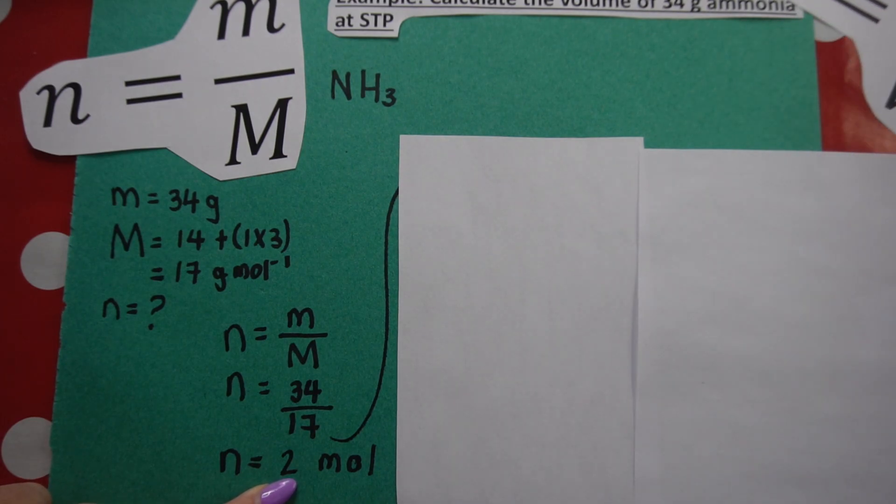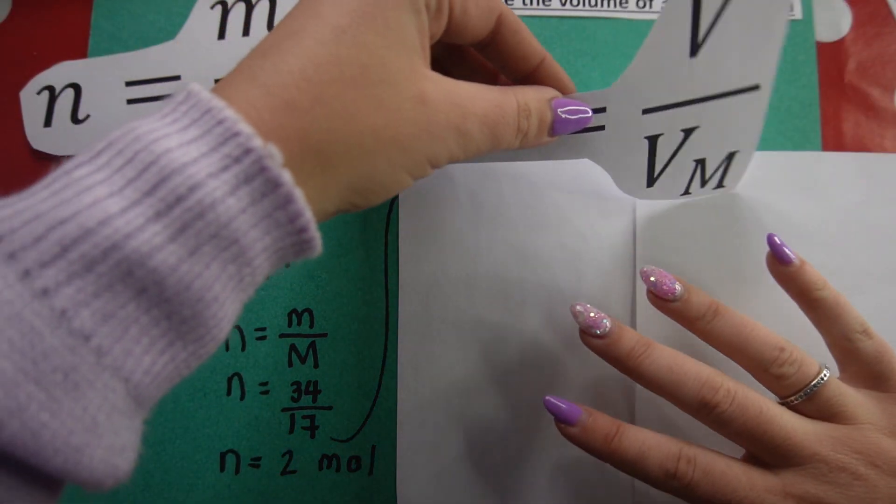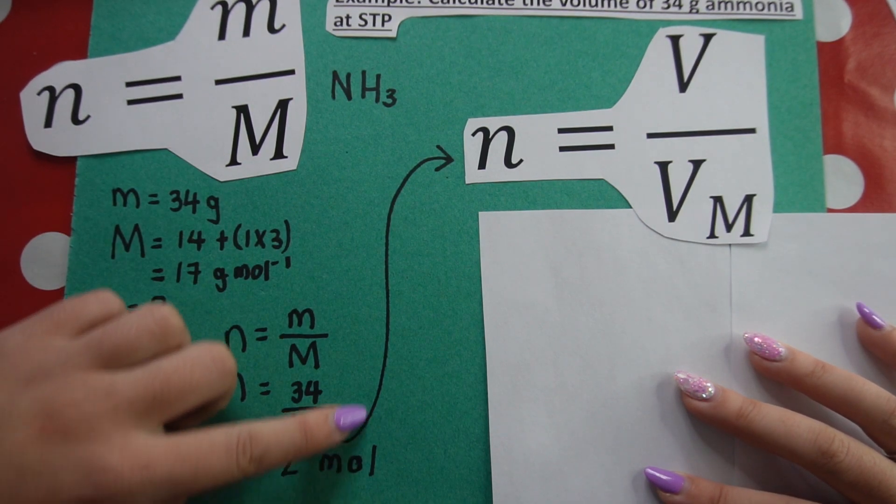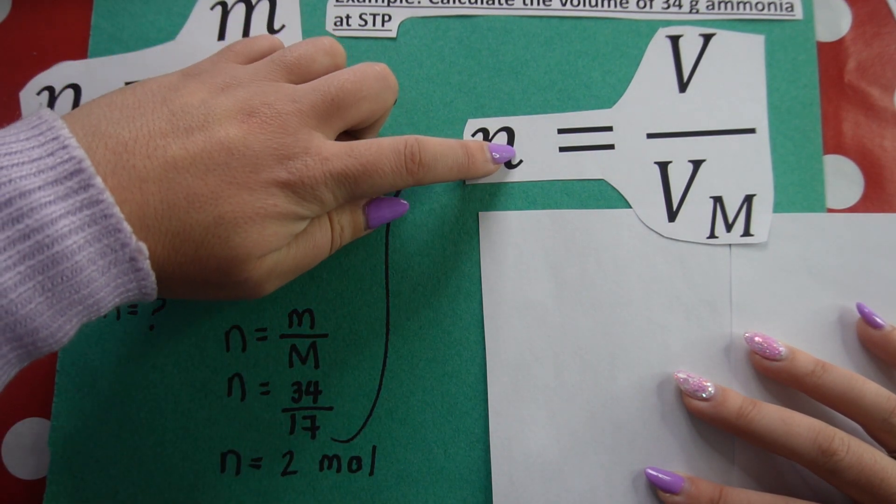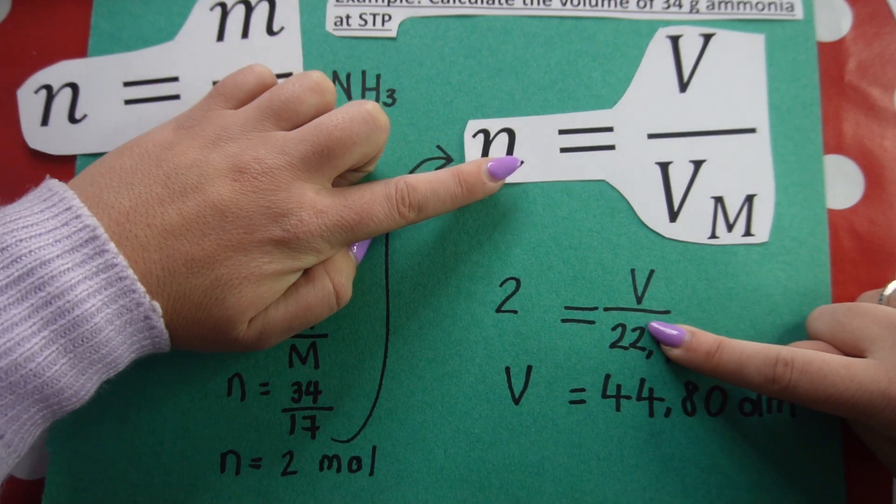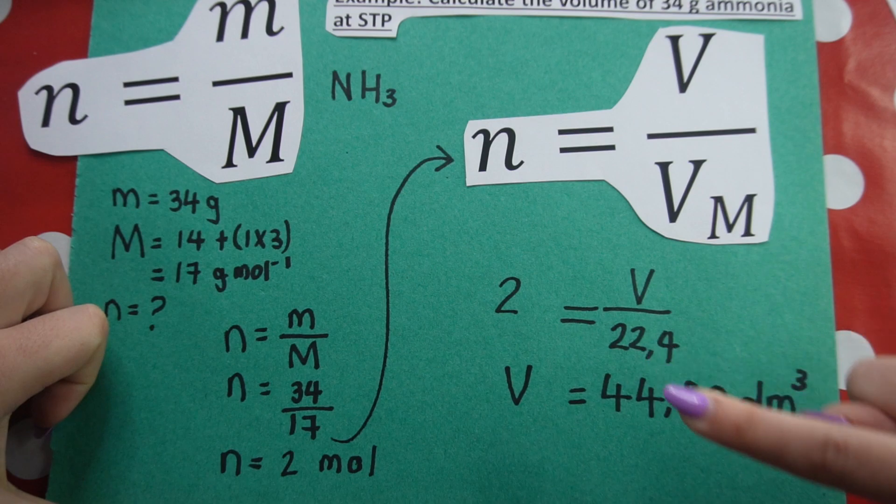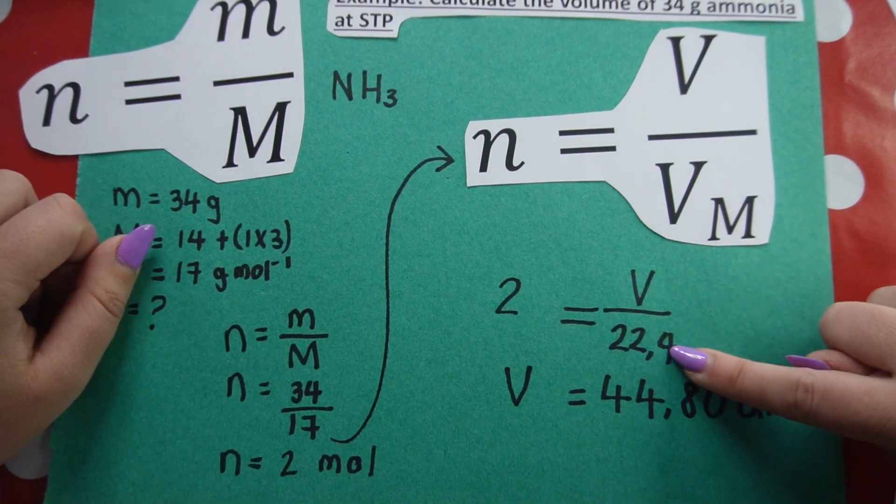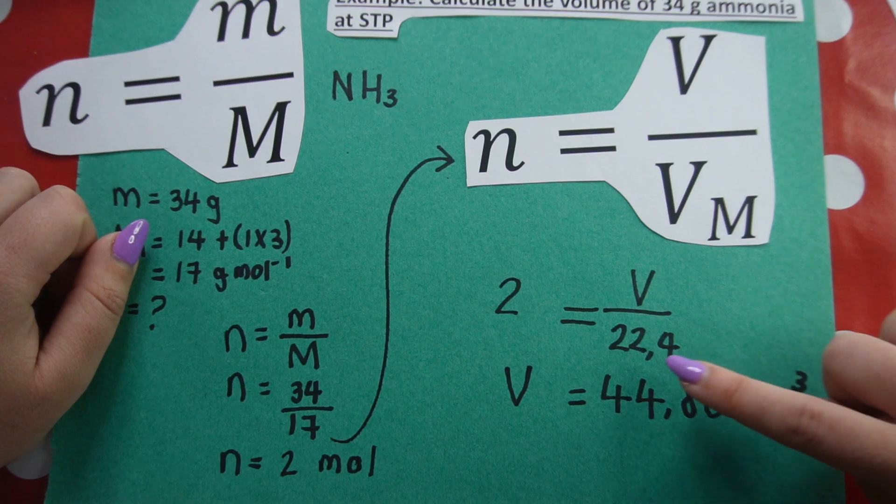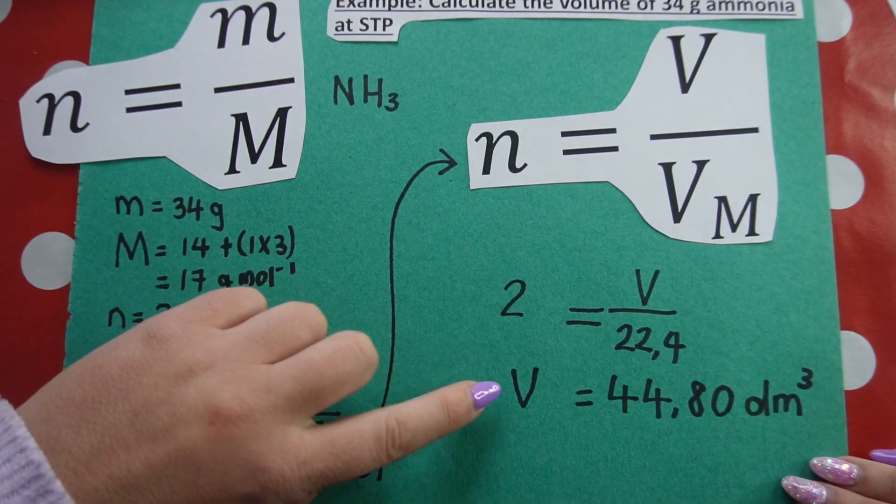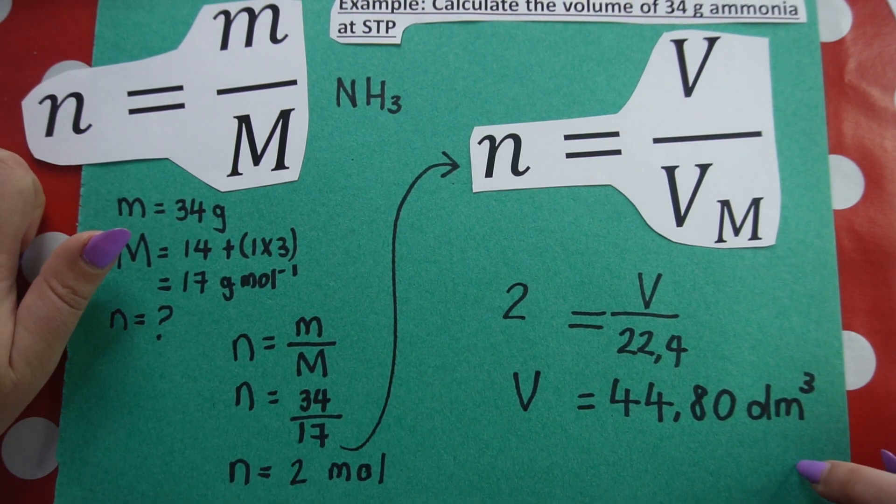Now that I've done that, I can use my other formula, which is N is equal to V over Vm. I now have number of moles, which will go in the place of N. I write my formula first. I substitute in the values or the variables that I have and I calculate my answer. I'm looking for V volume. Molar volume, because it's at STP, is 22.4 and therefore my volume of ammonia at STP is 44.8 cubic decimeters.